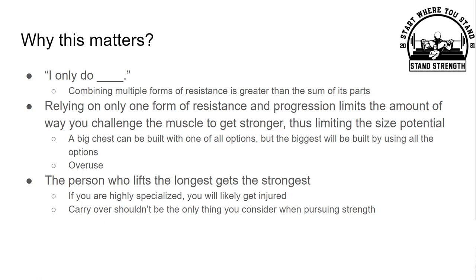If all you do is your competition bench and you never switch anything up, that's a one-way ticket to getting snapped up in the future. The main thing I take away from Matt Wenning when I was following a conjugate style of training was that the person who lifts the longest gets the strongest. If you are highly specialized, you will likely get injured. You're putting tension on the same structures repeatedly and not giving yourself the opportunity to let those things recover. Weak things break. Strength and weakness actually go together — if you are highly specialized and very strong, you are developing a weakness by letting everything else get weaker in comparison.